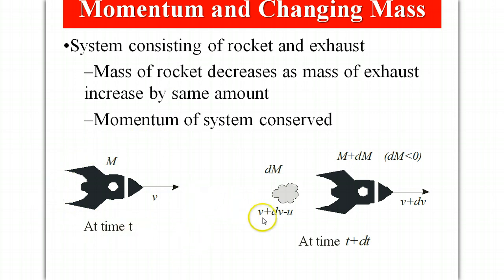At a short instant of time later t plus dt we have the rocket expelling some mass dM and in this case we're going to assume that dM is, since the mass of the rocket is actually decreasing, dM is a negative quantity.